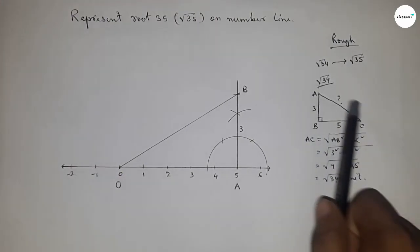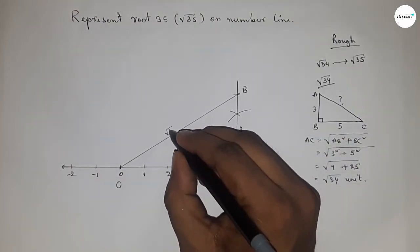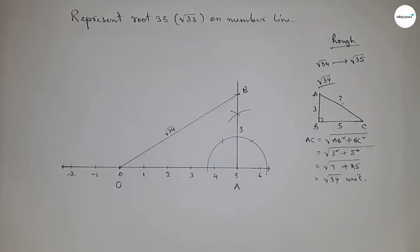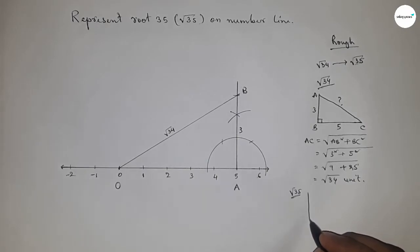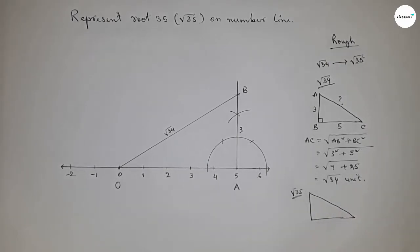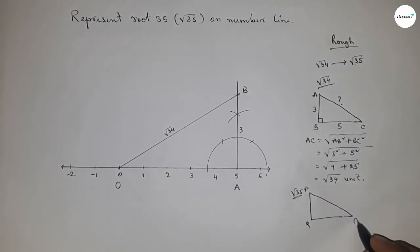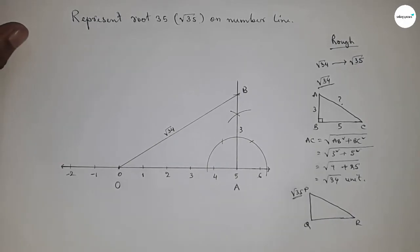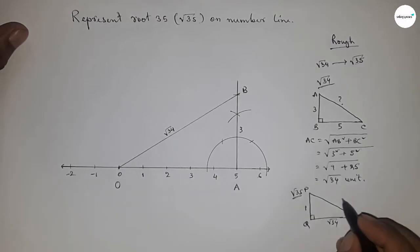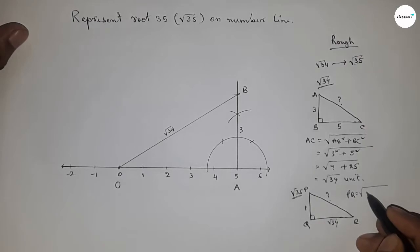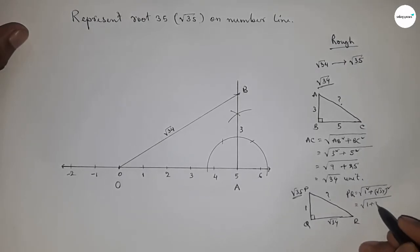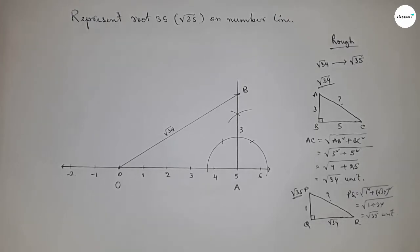From this construction we can say that this length is root 34 units. Next, for representing root 35: if there is a right angle triangle PQR with base root 34 units and height one unit, then by Pythagoras theorem, PR equals root of one squared plus root 34 squared, which is root of one plus thirty-four, so this equals root 35 units.